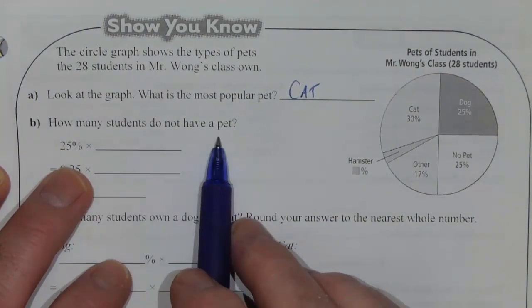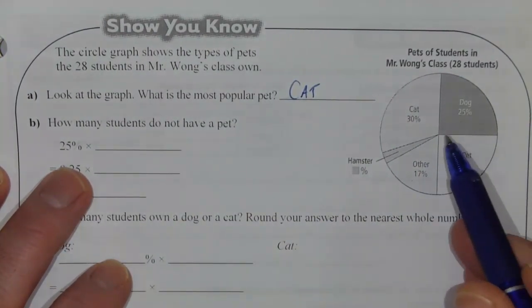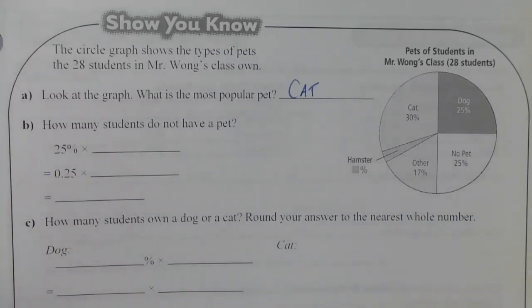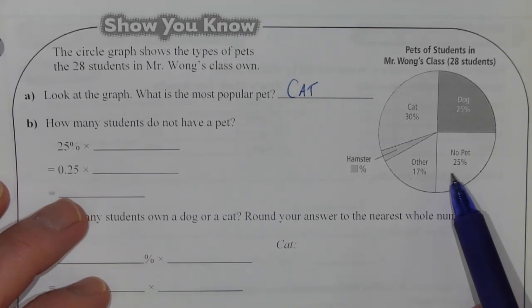How many students do not have a pet? Well, in this circle graph, the no pet is 25% of the class. Now, we don't know how many students that is. We're told that it's 25% of the class.